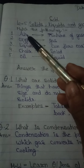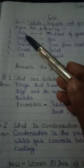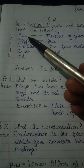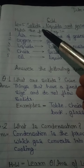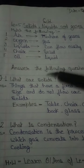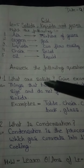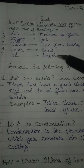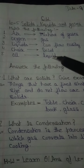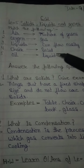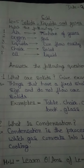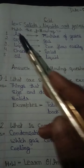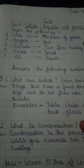First is air. What is air? Air is a mixture of gases. Air kya hai? Gases ka mixture hai. And ye kin gason ka mixture hai? It is a mixture of gases like nitrogen, oxygen, and carbon dioxide. So, air is a mixture of gases.